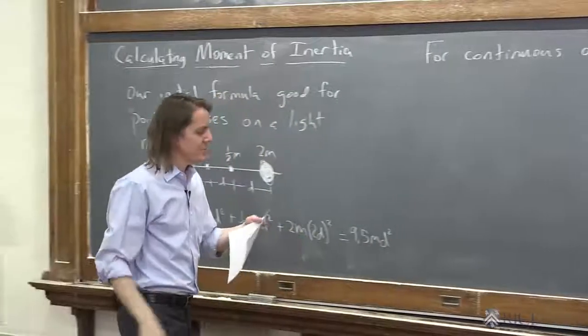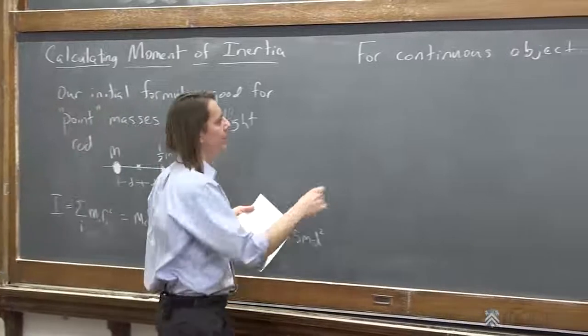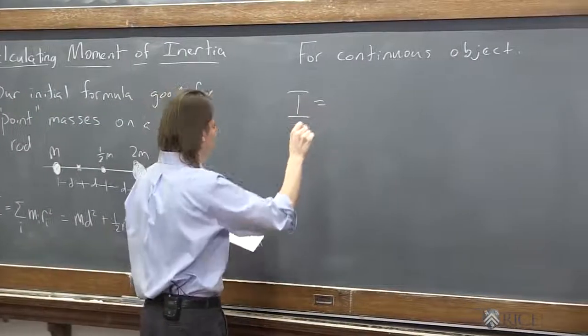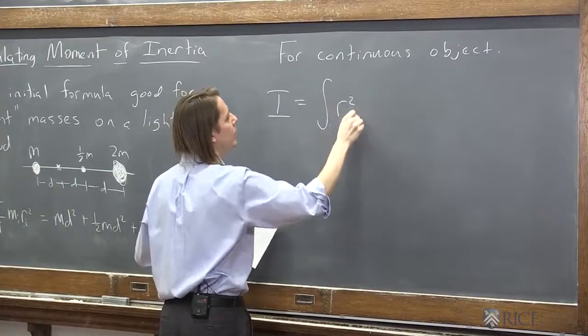So for that, you need integrals. So I'm just going to give you the three formulas, and then we'll do examples of how to calculate them. So first, I, in general, you would say as the integral, you sum up r squared dm.